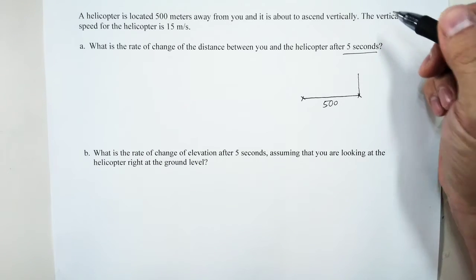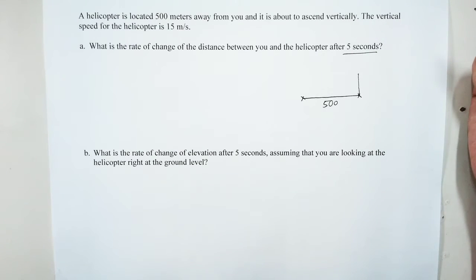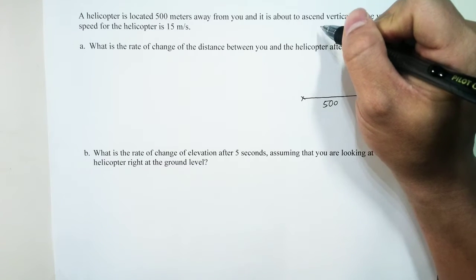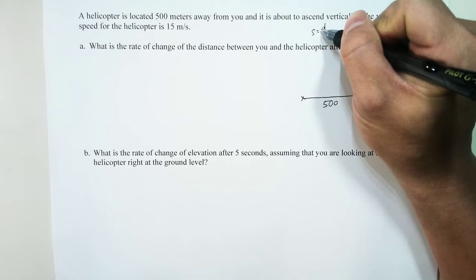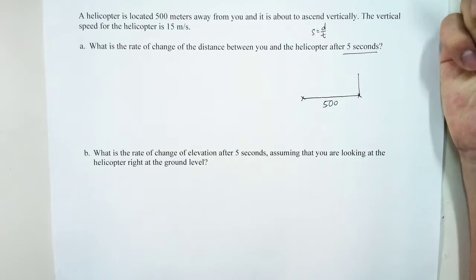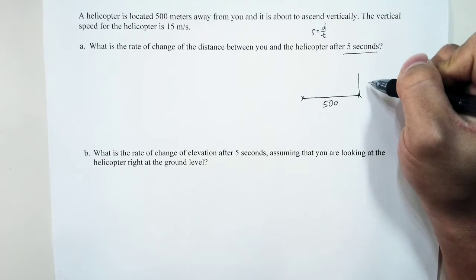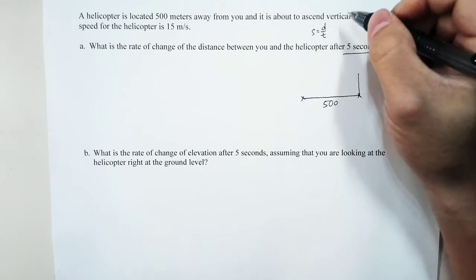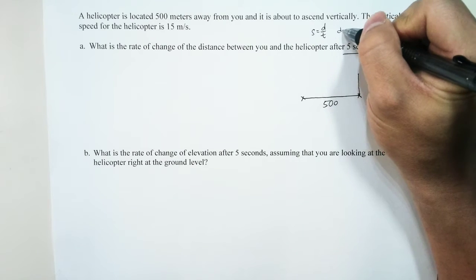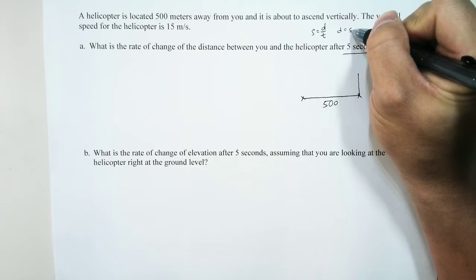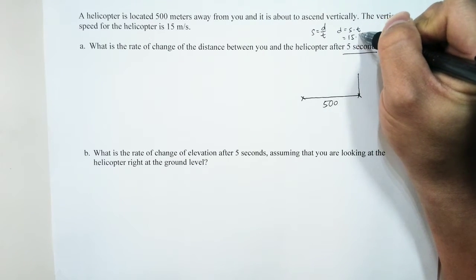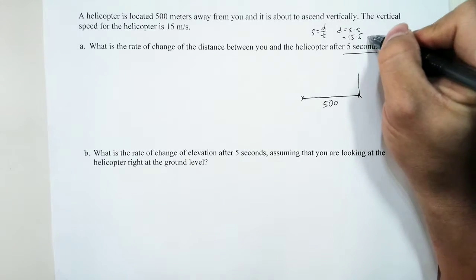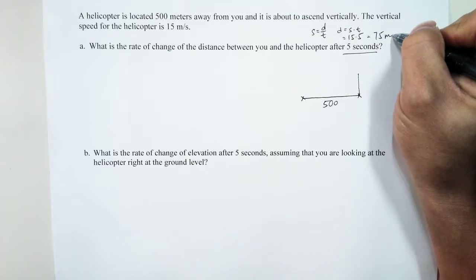It is going up for five seconds. How many meters has it gone up? It's straightforward: speed equals distance over time, so distance equals speed times time, which is 15 times 5, giving us 75 meters.